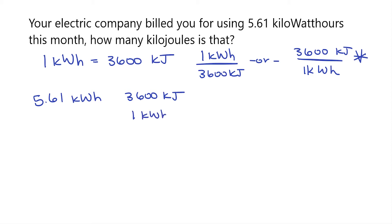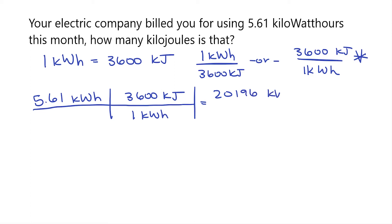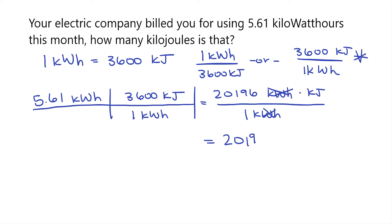Now that I have it all set up, let's go ahead and solve. We have to multiply our numerators first, so 5.61 times 3,600 comes out to 20,196. Then I need to do the same with my units — kilowatt-hour times kilojoules — and divide by my denominator, which is just 1 kilowatt-hour. Since I have kilowatt-hours on the top and the bottom, those cancel out, leaving me only with kilojoules. So 20,196 divided by 1 is still just 20,196 kilojoules.